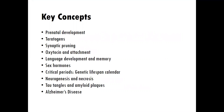We'll learn about synaptic pruning and what's happening at different stages of development — that cutback of synapses and what it means for associated behavior. We'll learn about oxytocin and attachment, and also another neurochemical known as vasopressin. We'll learn about language development and memory over the course of a child's life, sex hormones and the adolescent period, and we'll look at critical periods through the lens of the genetic lifespan calendar of Seth Grant.